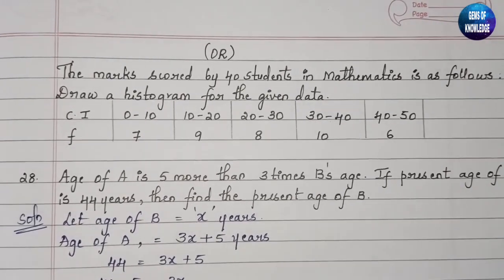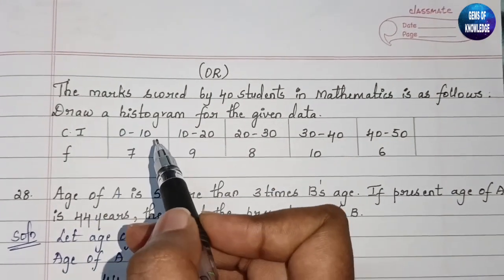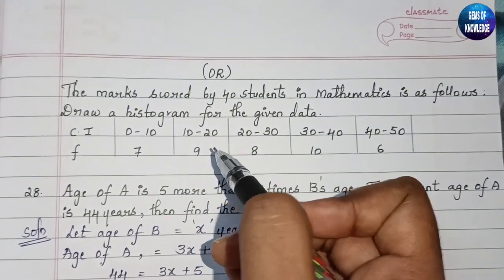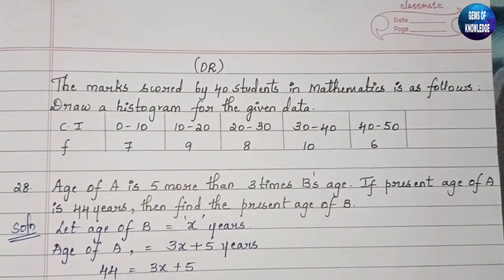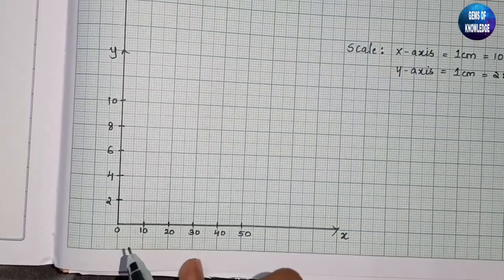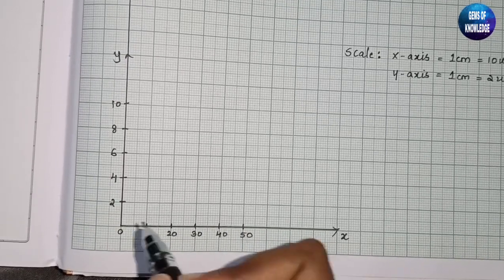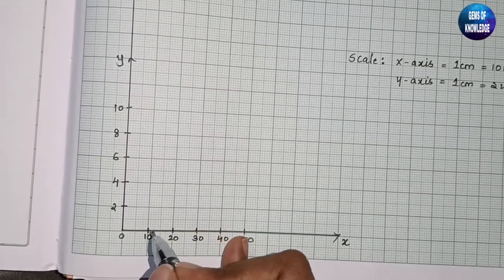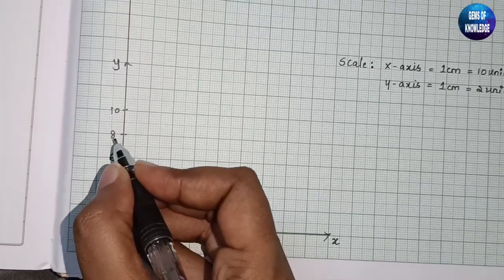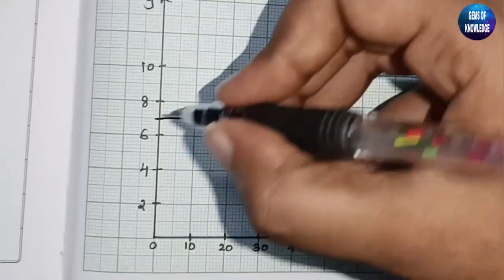Next question: marks scored by 40 students in mathematics are given — draw a histogram. Class intervals are 0–10, 10–20, 20–30, 30–40, and 40–50, with frequencies 7, 9, 8, 10, and 6 respectively. On the x-axis we take the class intervals and on the y-axis we take the frequency. For 0–10, frequency is 7, which falls between 6 and 8 on the y-axis.